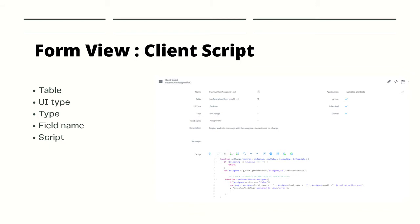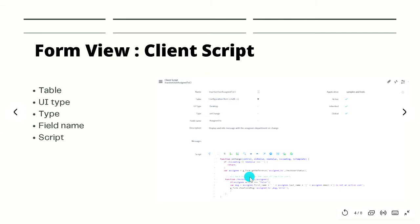OnLoad runs when the form loads. OnChange runs when a certain field value changes — for the onChange type only, you get a field name option to specify which field to watch. OnCellEdit mainly works on the list view when you want to perform some validation or put client script conditions on the list view. OnSubmit will work when you try to submit the form. Below that there is a description field where you can define what the client script does.